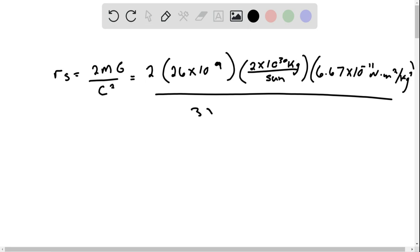Divided by the speed of light, which is 3 times 10 to the 8th meters per second—I was looking at the wrong number there—and that is squared.